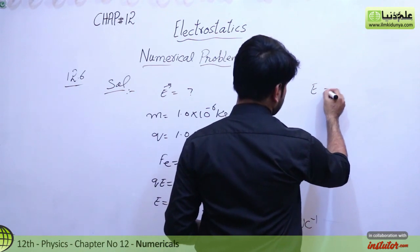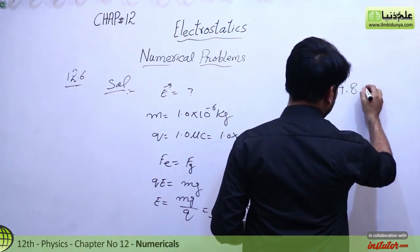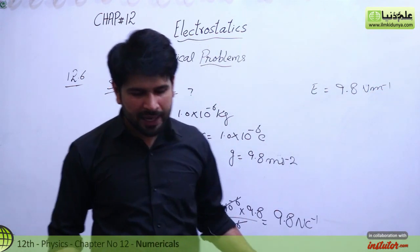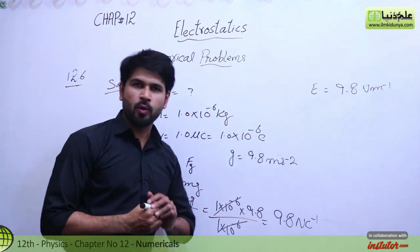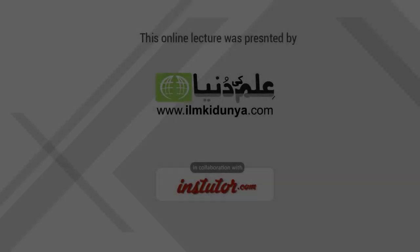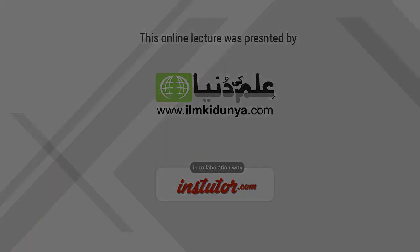Here you can write E equals 9.8 volt per meter. This is another unit of electric field strength. It's quite an easy numerical problem. You can do this as a short question. This can come in short form.